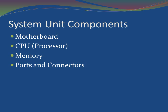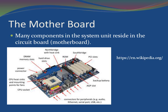System unit components include the motherboard, CPU, memory, ports, and connectors. The motherboard contains many of the electronic components in the system, which reside on a circuit board called the motherboard. The motherboard contains many different types of chips.